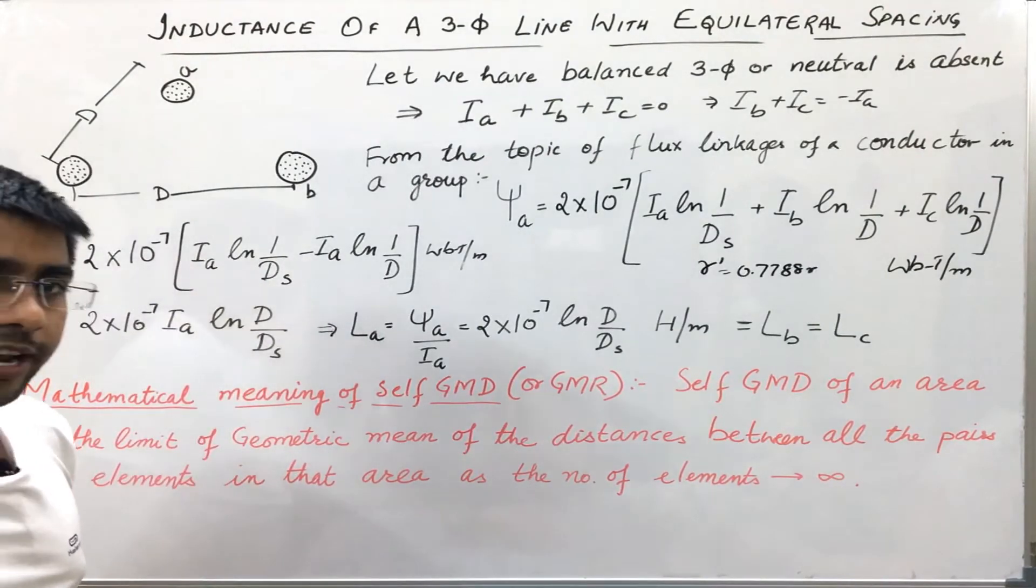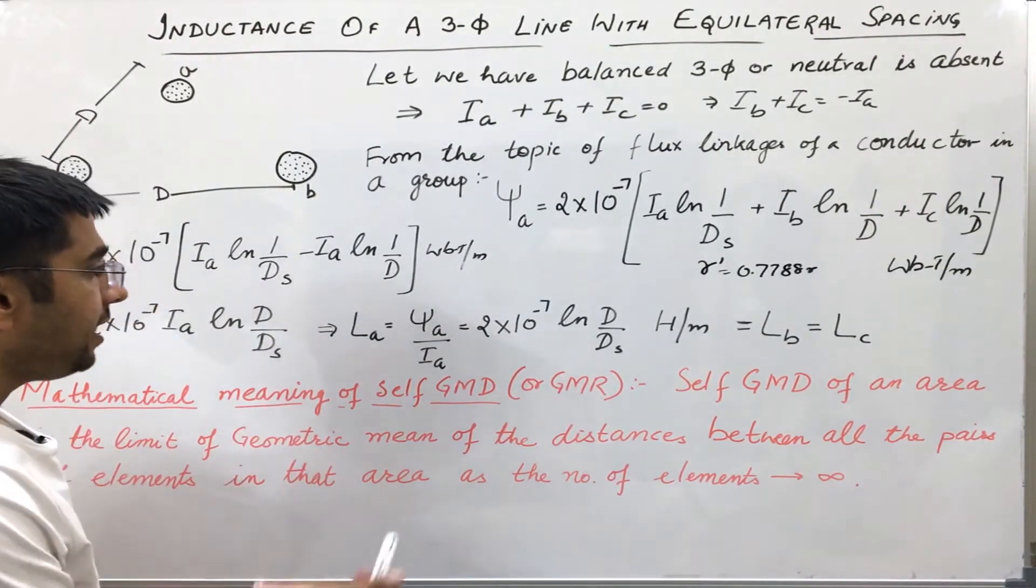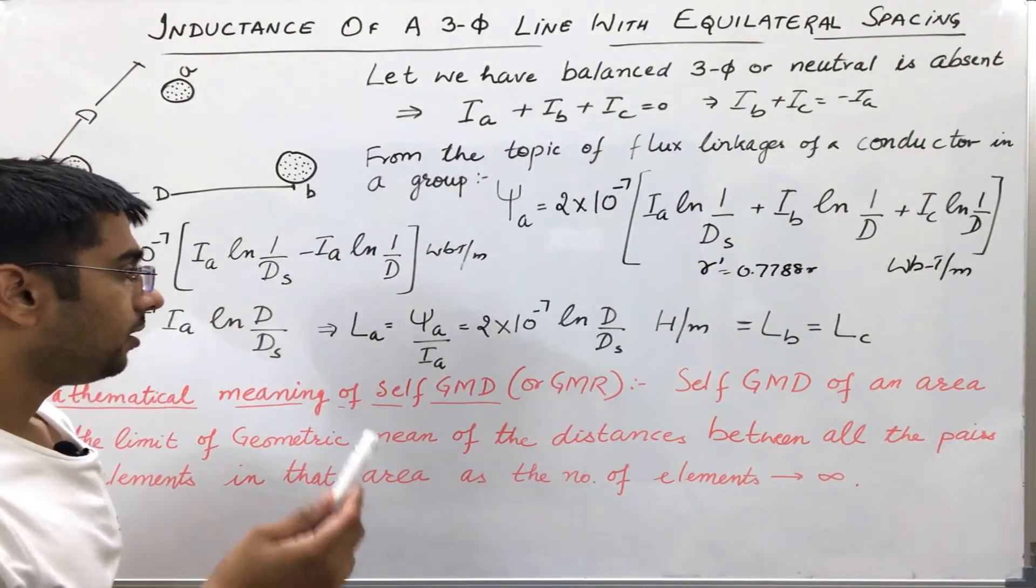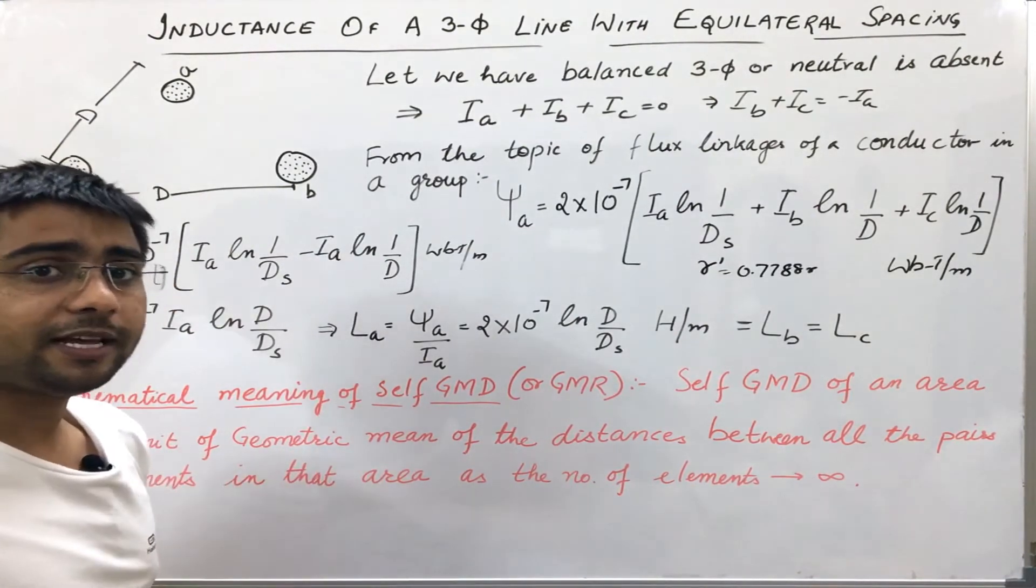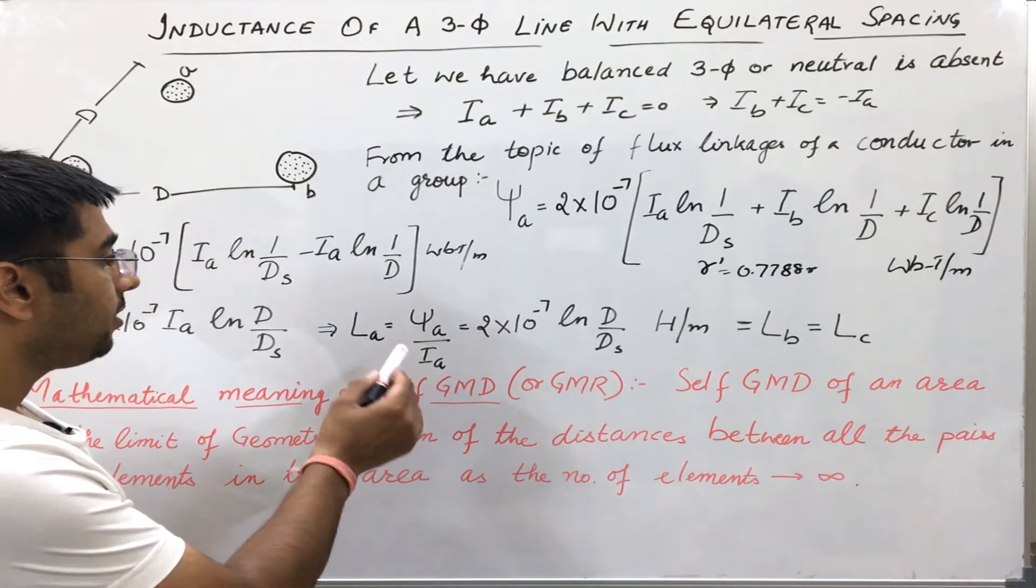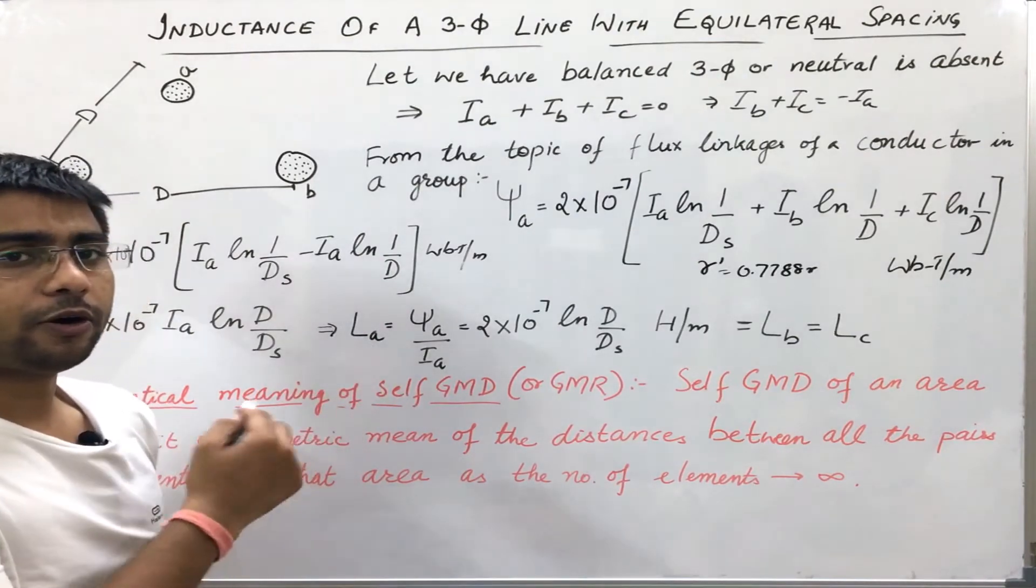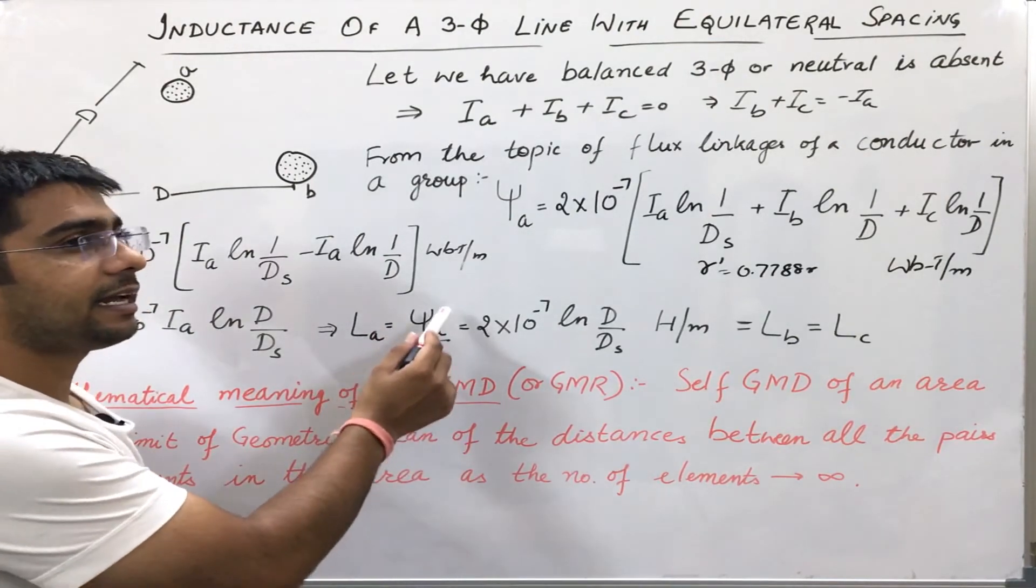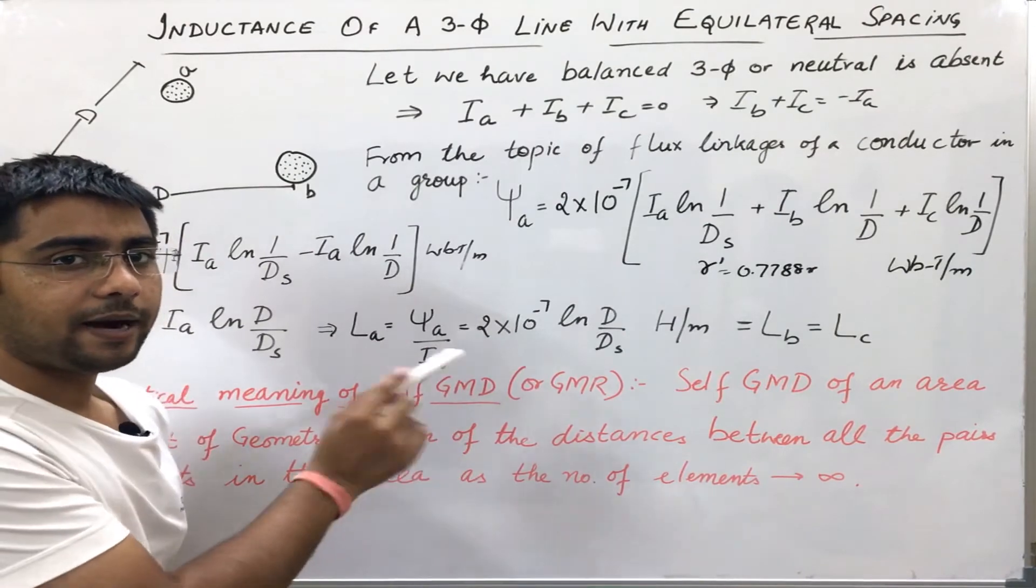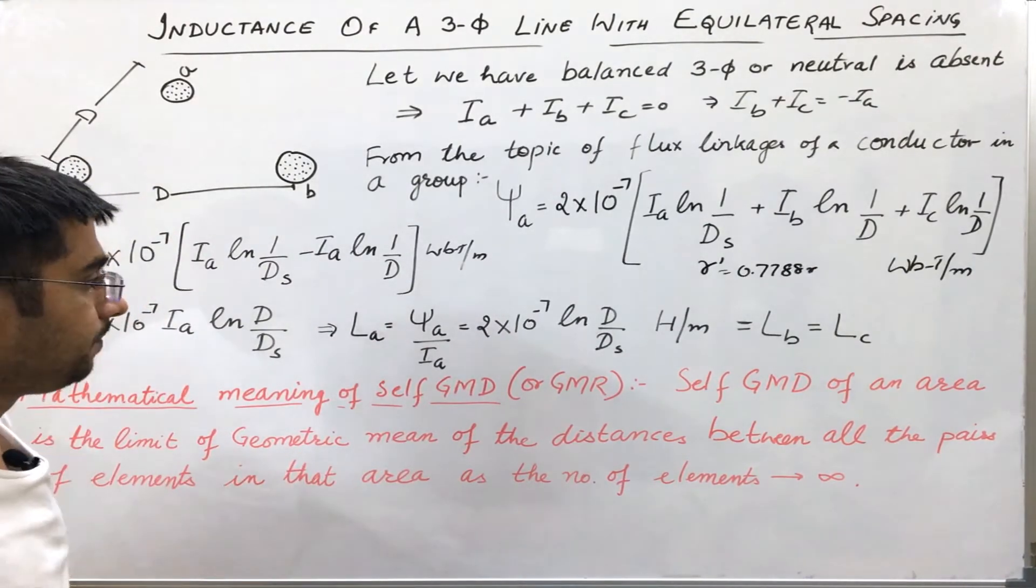Now, we already know that for a linear circuit where the permeability is constant, the inductance is simply found out by dividing the flux linkages of that conductor by the current carried by that conductor.